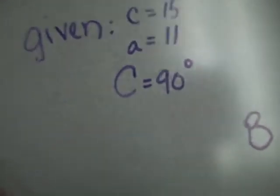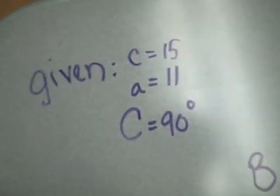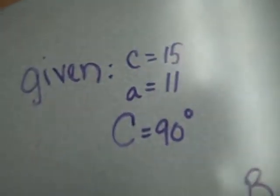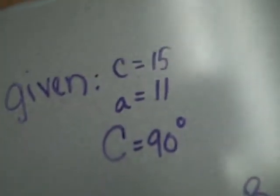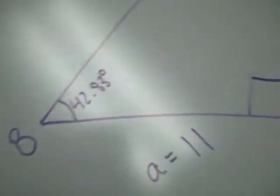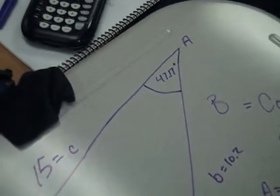Hi, I'm John and I'm Anna, and we did problem number nine. We were given a triangle with side C of 15, side A of 11, and angle C of 90 degrees. We drew a triangle here with side 15 as the hypotenuse across from the 90 degree angle, and side A is 11.